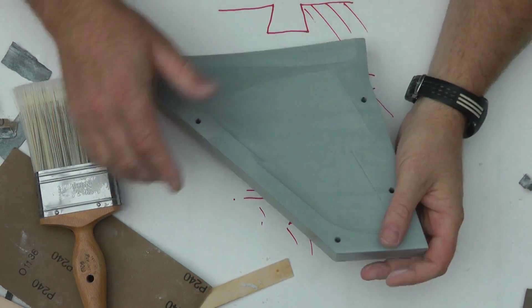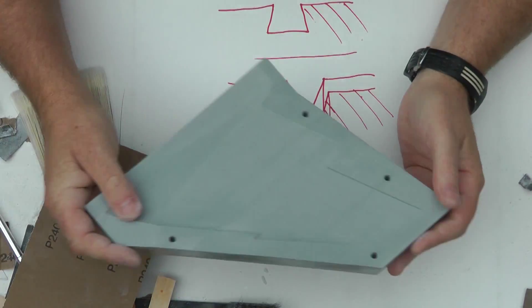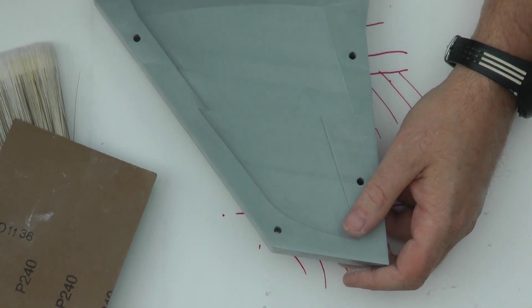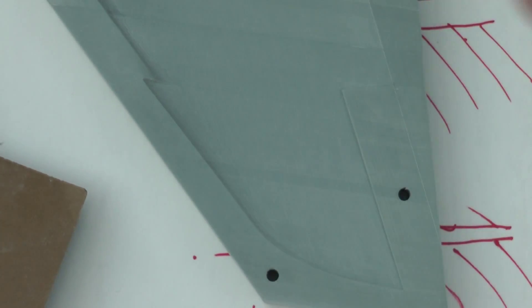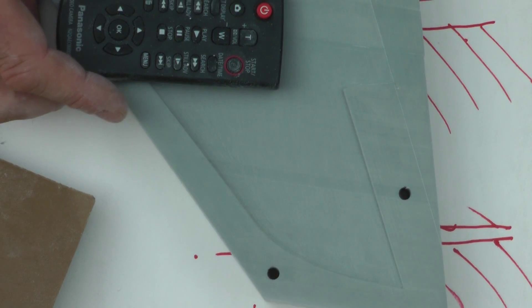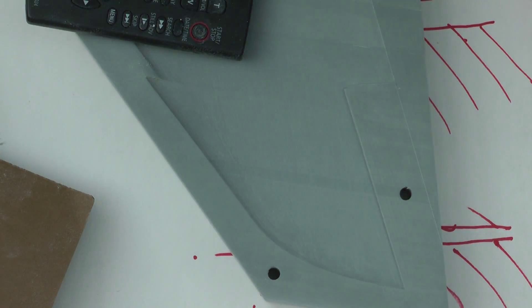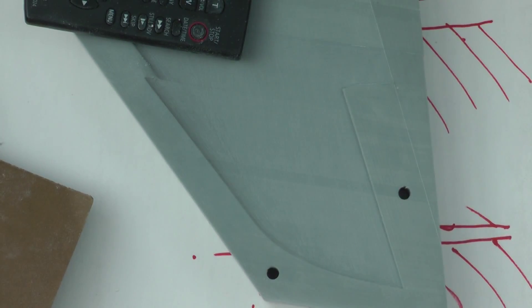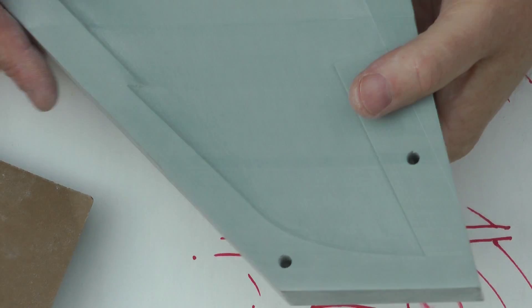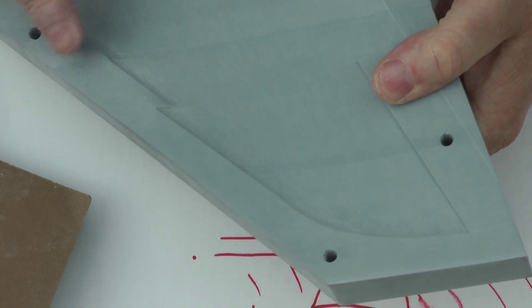So we've done our first pass with the 240 grit sandpaper. All in all, I'm pretty happy with the way things look. The seam, the joints come out great.